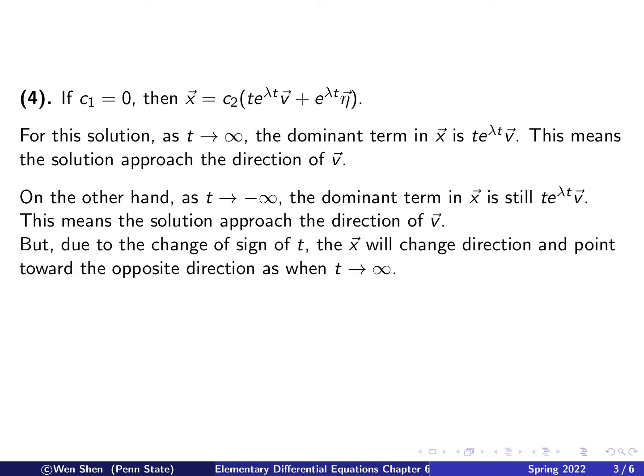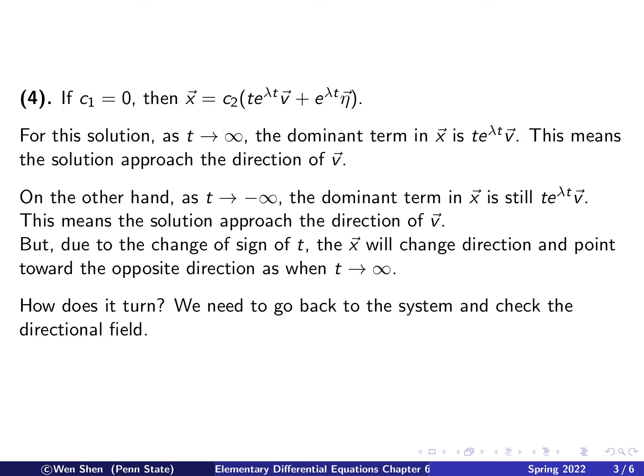However, there is a change of direction: when t is large and positive versus large and negative, the direction is flipped exactly 180 degrees, caused by the change of sign of t. Therefore, the solution changes direction — it comes out from the origin in one direction at t→-∞, then makes a turn and goes in the opposite direction as t→+∞. The final thing is to understand the direction of rotation, and for that we need to go back to the system and check the direction of the field.